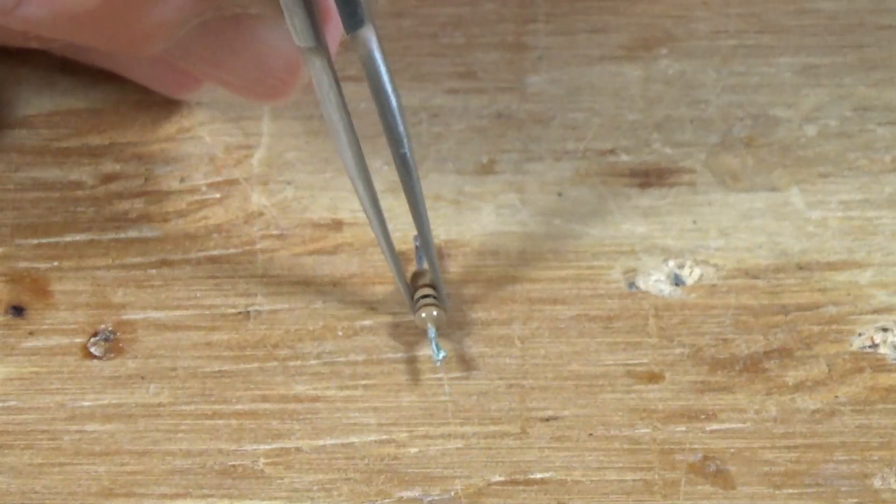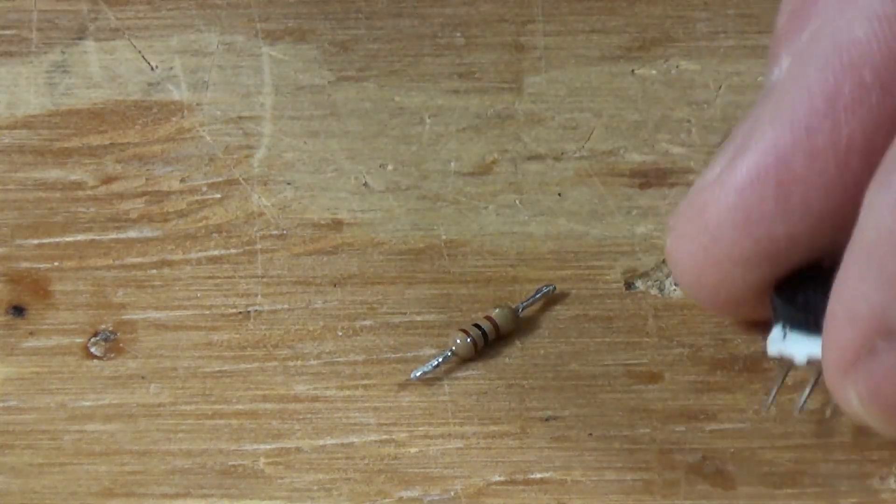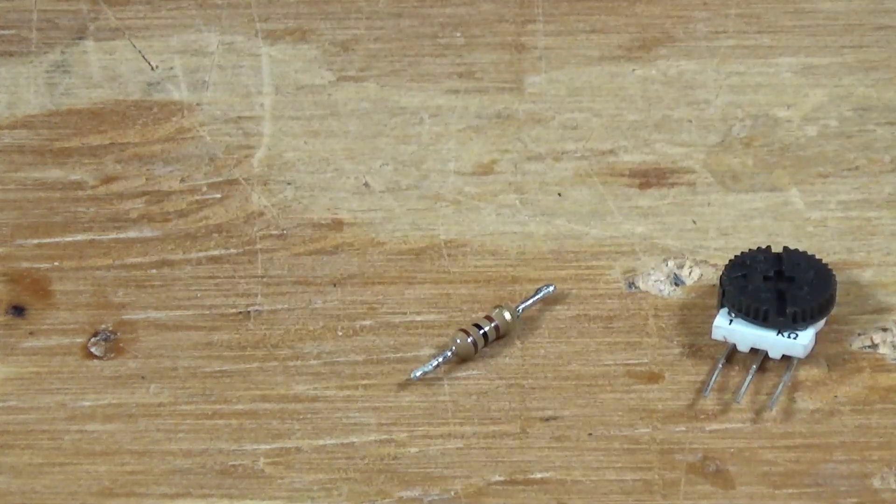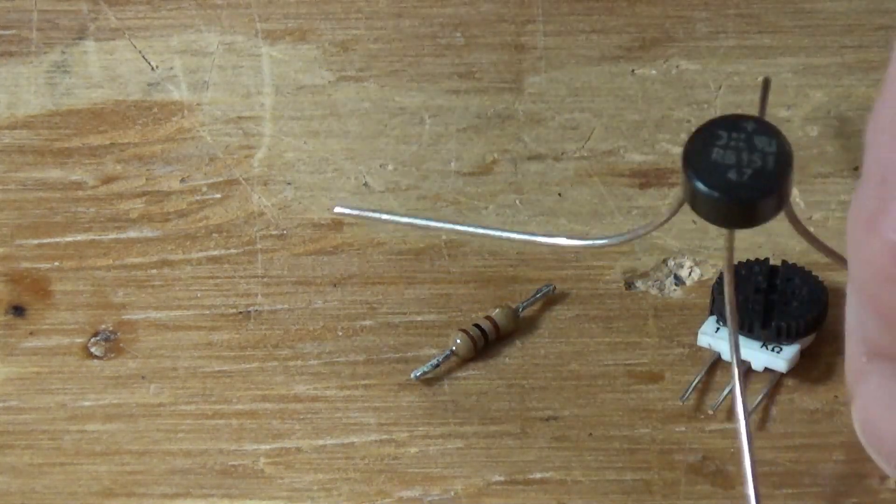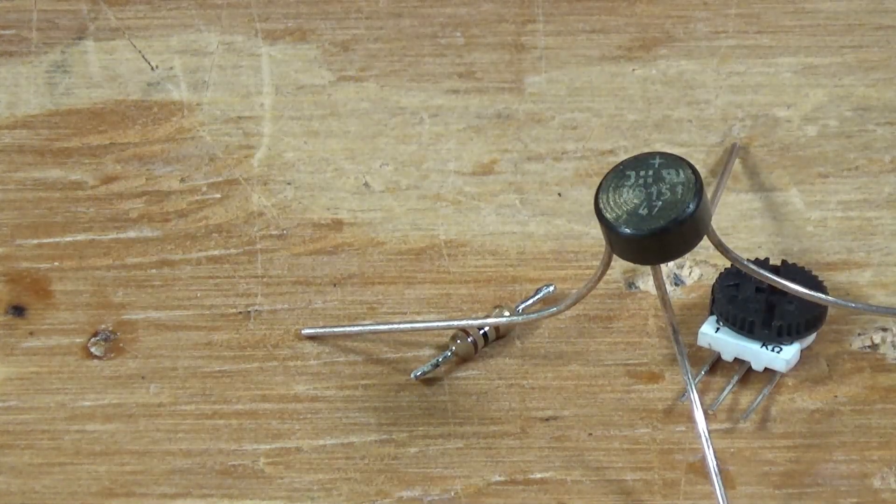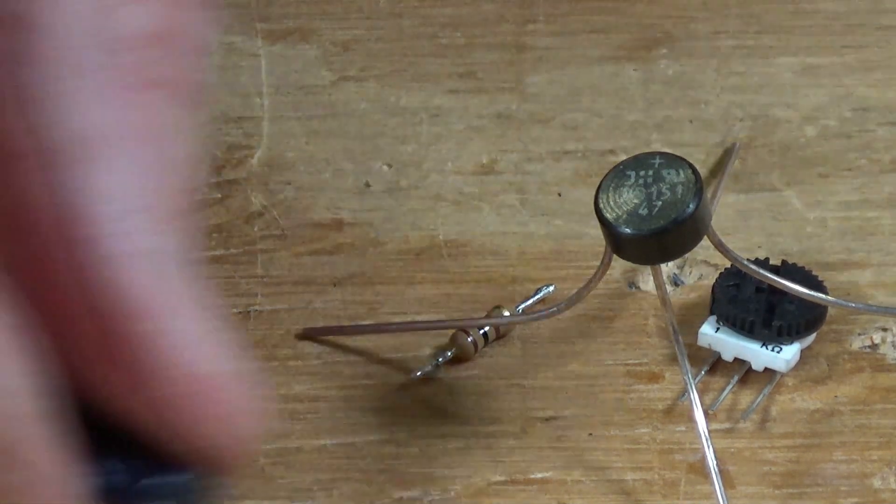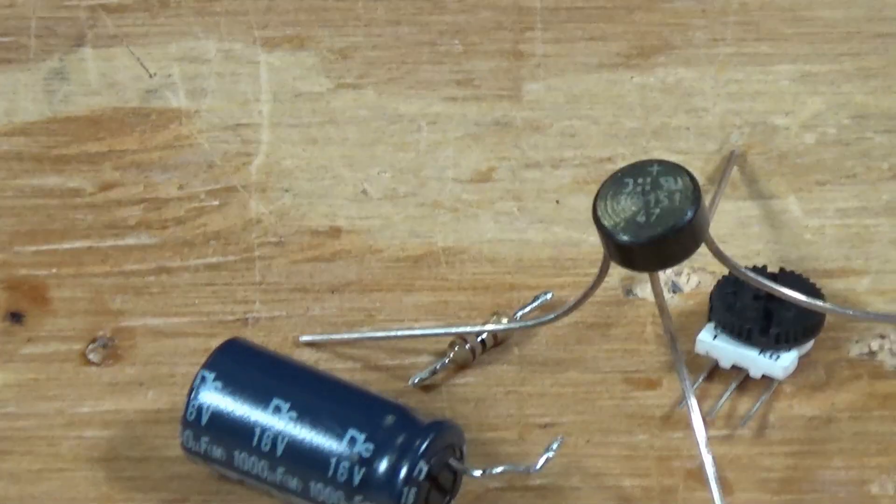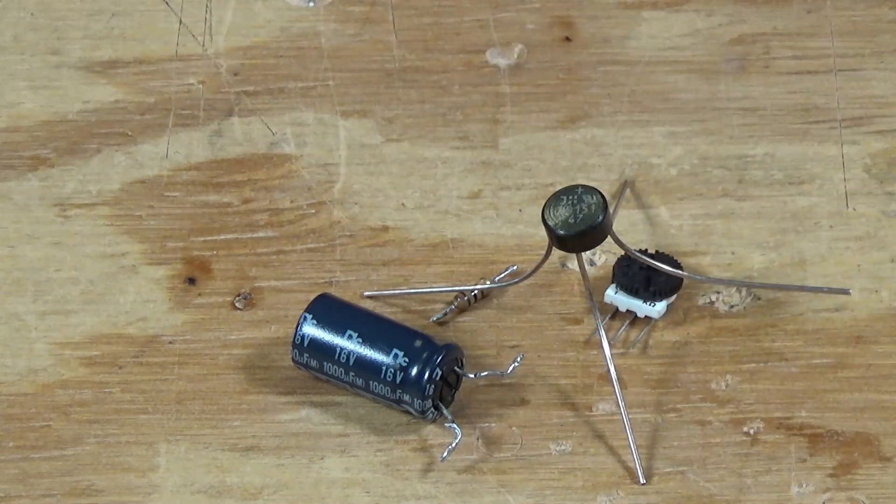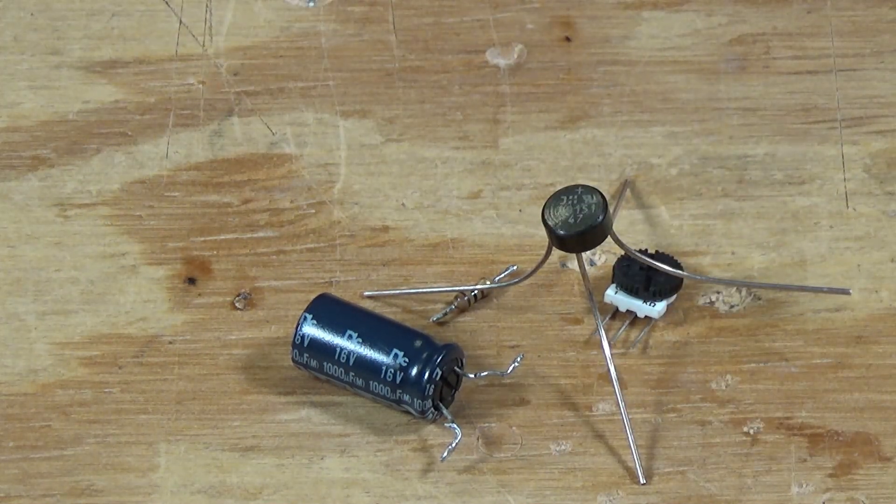We've got our fixed resistor of 100 ohms for an inrush current protector. We've got the variable resistor with the trim pot. We have our bridge rectifier and we have our capacitor. So that's the four components. So let me show you how they go together.